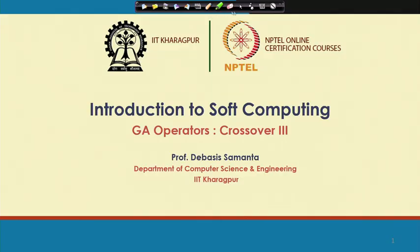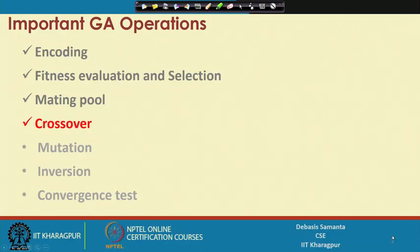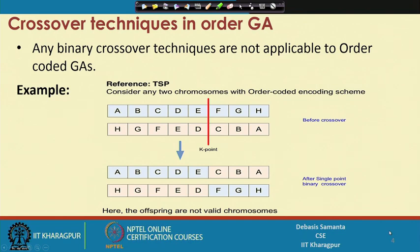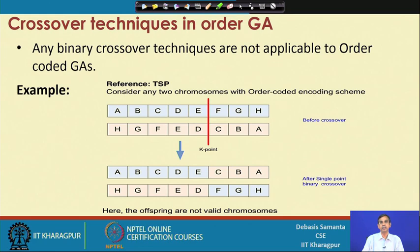Real value-coded GA is totally different from binary crossover techniques because it needs a completely different treatment. Now we are going to discuss another GA technique called the order GA, and the crossover technique used in order-coded GA. The order-coded GA is basically based on the concept of the sequence of values in the chromosome.